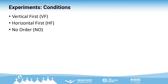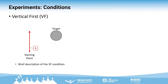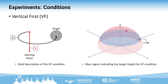We designed three different feedback conditions for the user study. The first one is the Vertical First condition, which we call the VF condition. It provides directional guidance to users in two steps: first vertical direction and then horizontal direction. It plays a beeping sound repeatedly to guide users towards the target height. We set a blue region shaped like a disk, as shown in the figure, to indicate the vertical position of the target. The height of the disk is set to the diameter of the target.